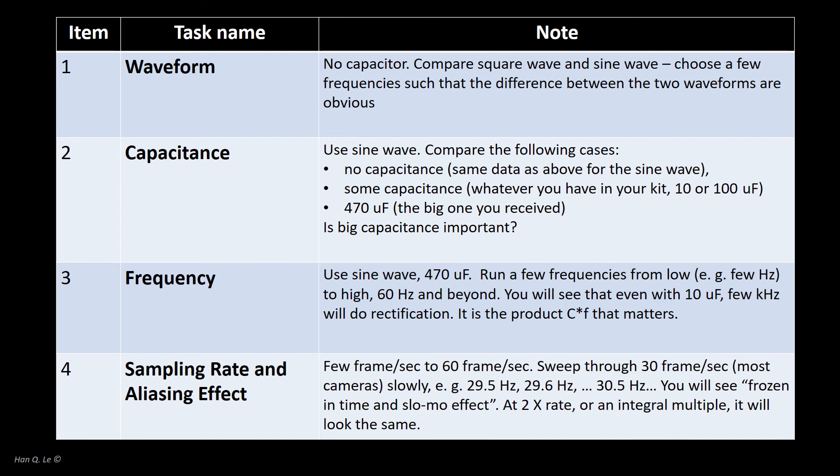Both capacitance and frequency are important for a smooth, time-constant DC output from sinusoidal input. It is their product, C times F that matters. Hence, a combination of, say 10 µF with 2.8 kHz, is equivalent with 470 µF and 60 Hz, or 100 µF and 280 Hz.